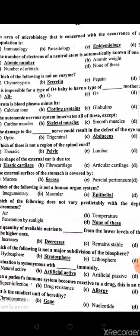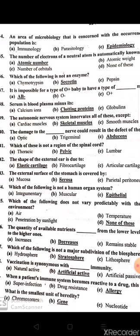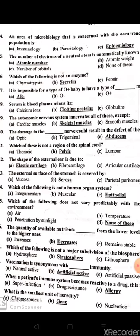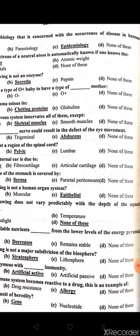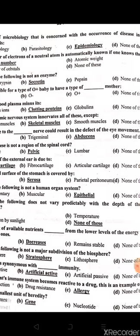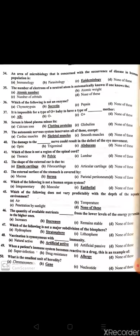The micron — polyethylene — sulfur is a secondary plant nutrient. The area of microbiology that is concerned with the occurrence of disease in human populations is epidemiology.